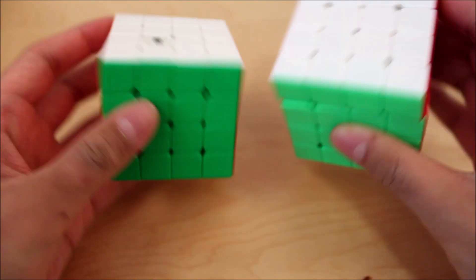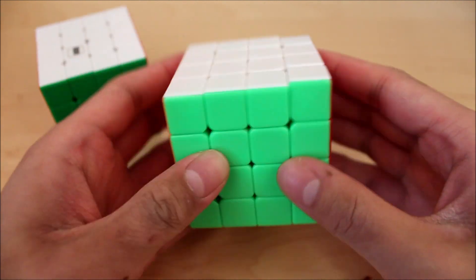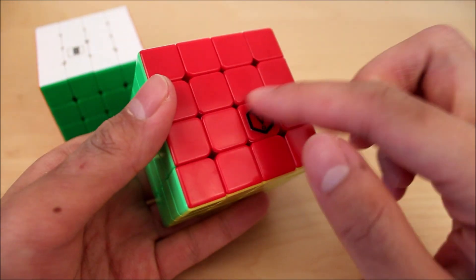Alright, in this video I'll be doing a comparison of these two cubes. This is the Aosu WR-M, this is the Aosu GTS-2M. This is the ink version actually.